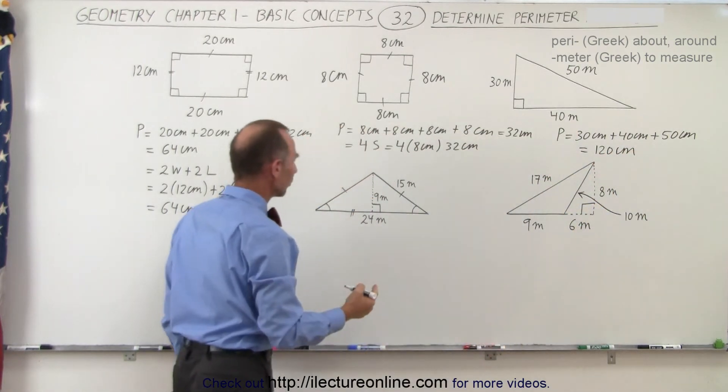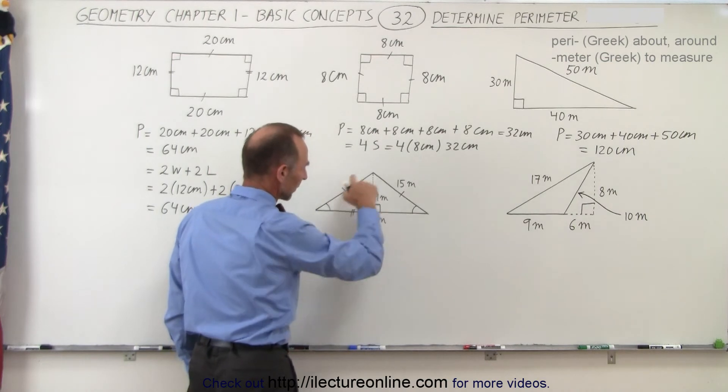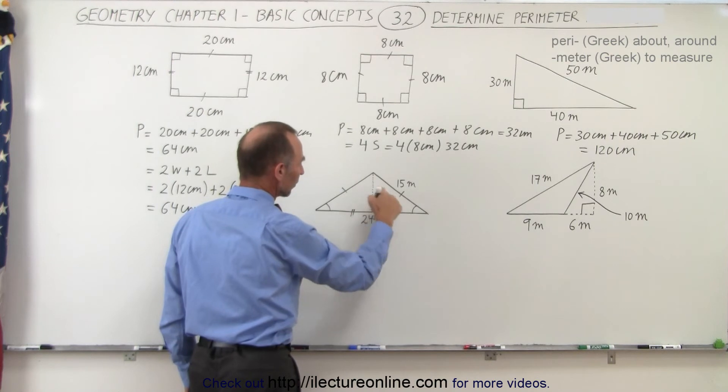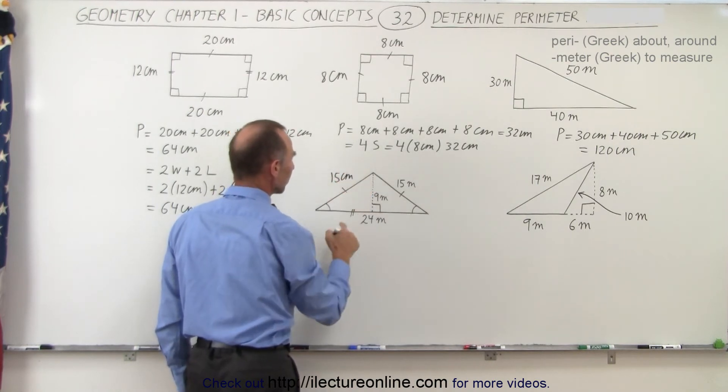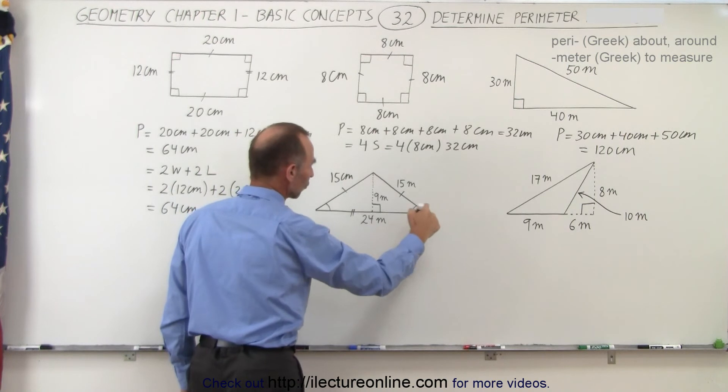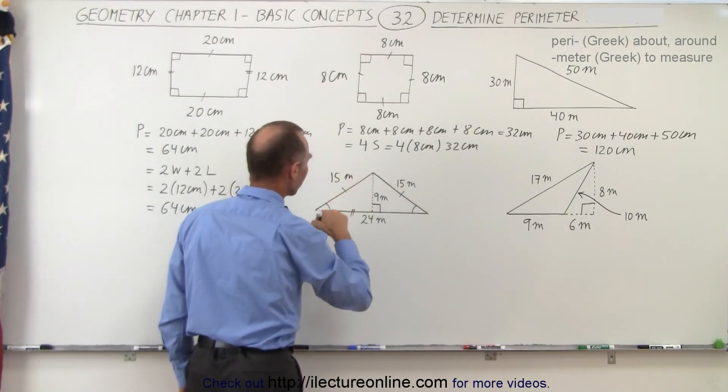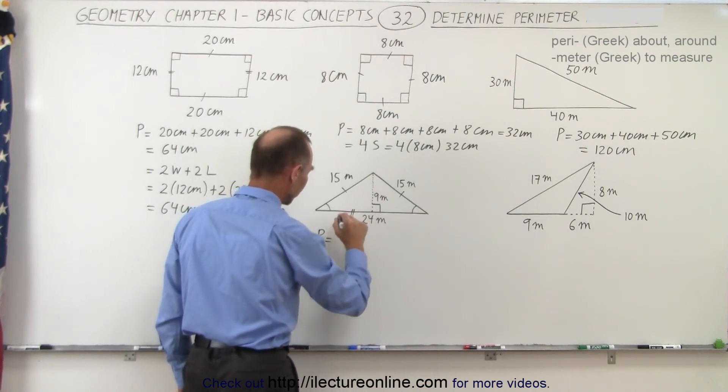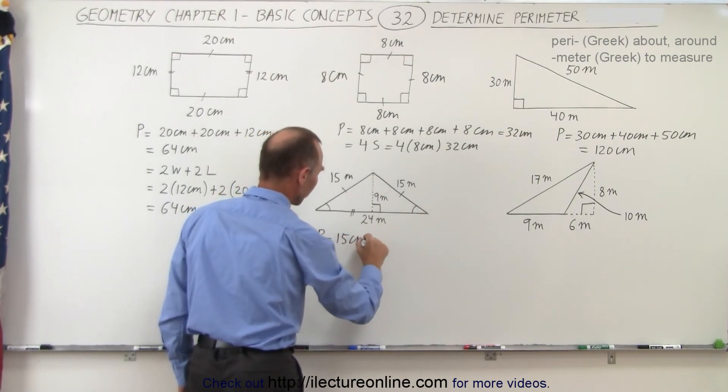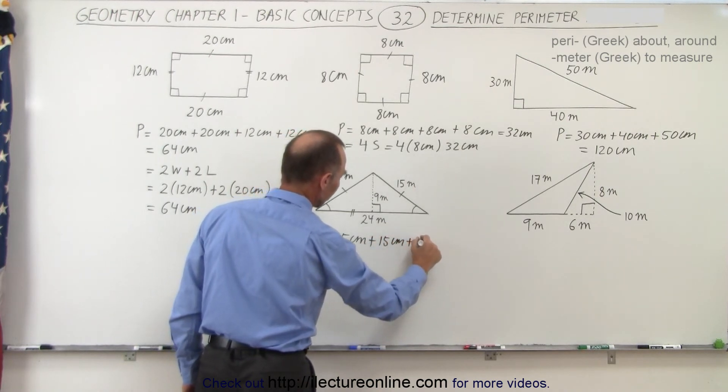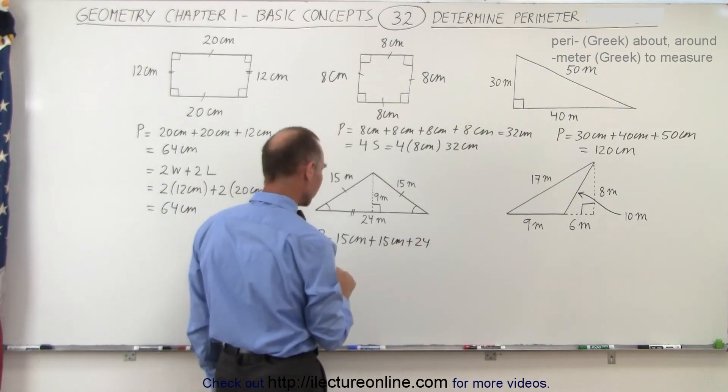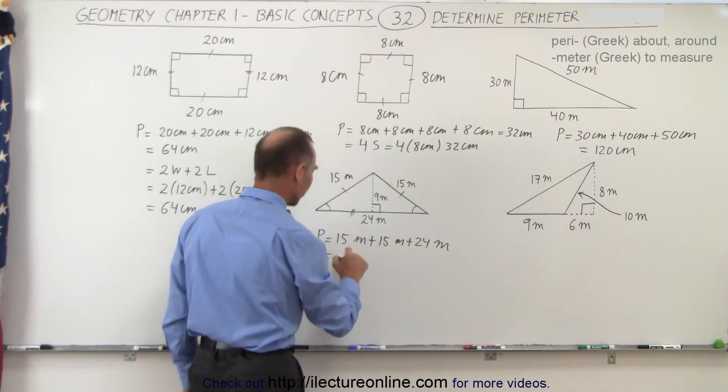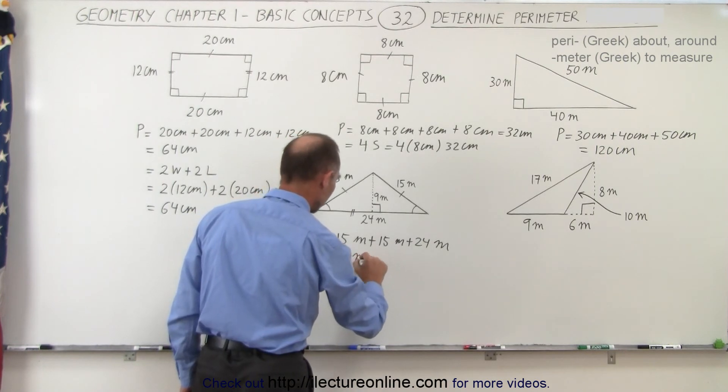And here again, if you want to know the perimeter here, notice that these have indications that those two sides are congruent, they're the same length, so we can say that this is 15 meters as well. The long side here is 24 meters, so the perimeter is equal to the sum, just like before, 15 meters plus 15 meters plus 24 meters. And so that's 30 plus 24, that's 54 meters here.